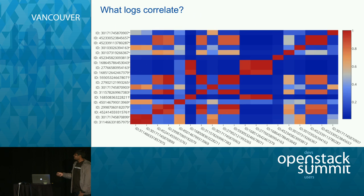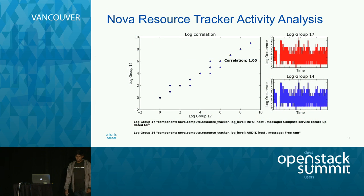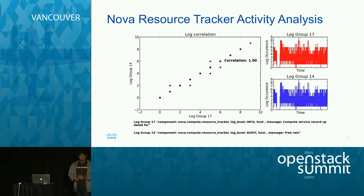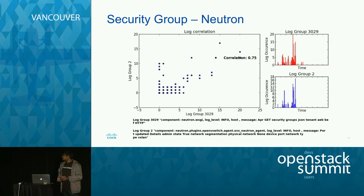In the correlation matrix, we see a lot of reds — these are logs which are highly correlated to each other. When we analyzed these, we found that Nova has a resource tracker which checks resources in all the compute nodes at a certain period of time, looking for free RAM, free CPUs, and free disks. These logs are supposed to occur at the same period of time and at the same frequency, even though they are on different machines. By the analysis we found they are correlated with a very high degree.